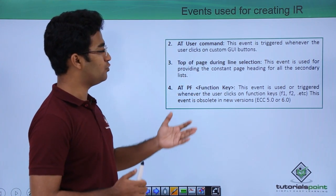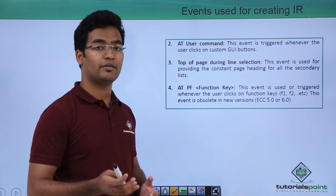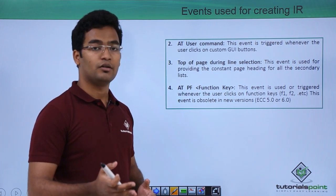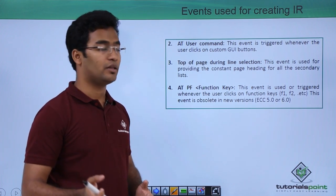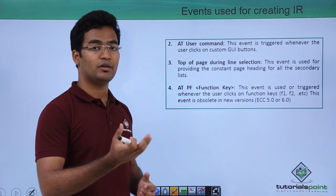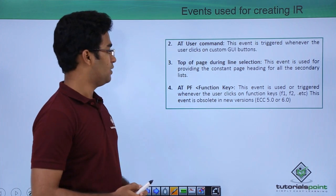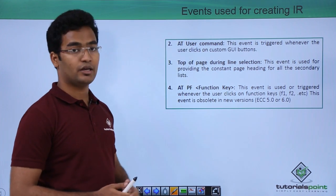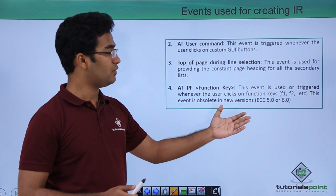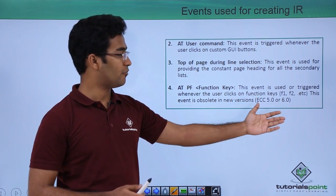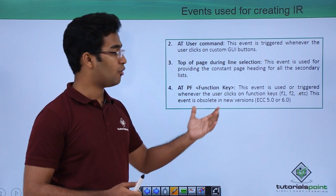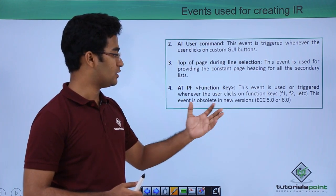Then we have TOP OF PAGE DURING LINE SELECTION. Whenever we are selecting a particular line and transferring to the second page, that is into a secondary list, we can give a particular page number at the top. Then we have the AT PF function key event, which is triggered whenever we press F1 or F2, but this event is now obsolete in the latest versions.